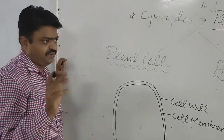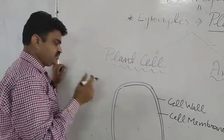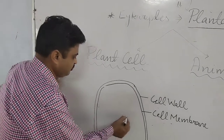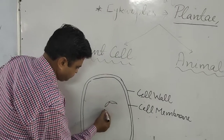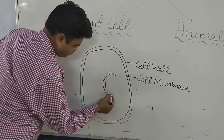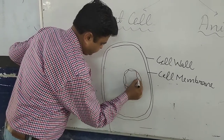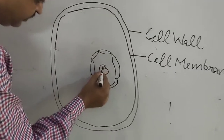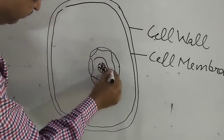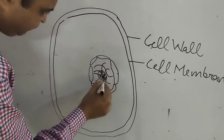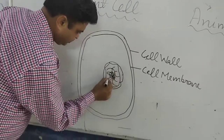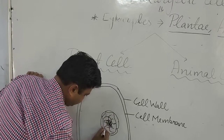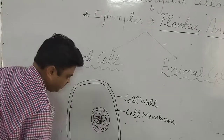The nucleus is found in eukaryotes, and in the plant cell it is located at the side of the cell. The nucleus has a double nuclear membrane. Inside it there is a dense body called the nucleolus, thread-like structures called chromosomes, and granule-like structures on the chromosomes called genes. There is also a fluid-like medium found inside the nucleus.